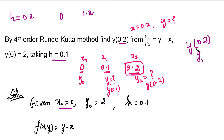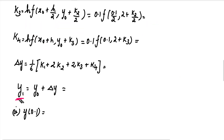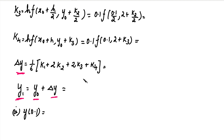The formula is: y1 = y0 + delta y. Delta y is given by (1/6) multiplied by (k1 + 2k2 + 2k3 + k4). So for delta y, we need to calculate four values: k1, k2, k3, and k4.